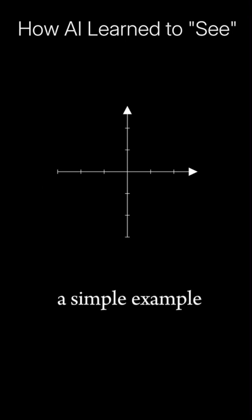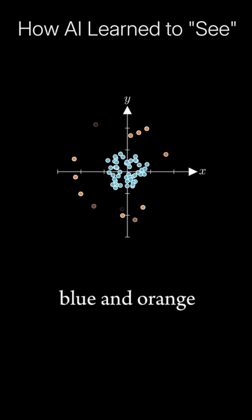Let's look at a simple example to see why features are important. Here we have data points from two groups, blue and orange.